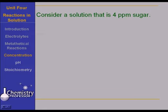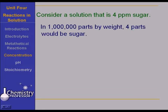Consider a solution that is 4 parts per million sugar. What does this mean? This means that in a million parts by weight—a million grams, a million pounds, a million milligrams, whatever—that 4 parts would be sugar: 4 grams, 4 pounds, 4 milligrams, depending.